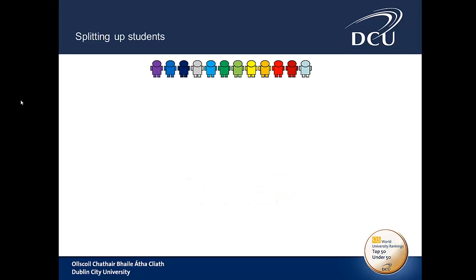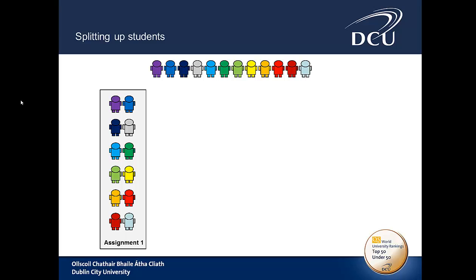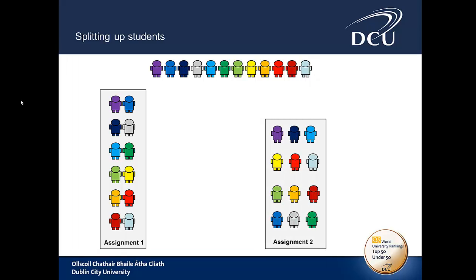The example I used in a previous screencast is a class with 12 students. For the first assignment we want them to do it in pairs and the second assignment we want them to do it in threes. As you will see it's different students paired up on each occasion.